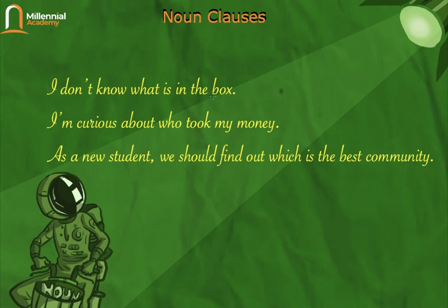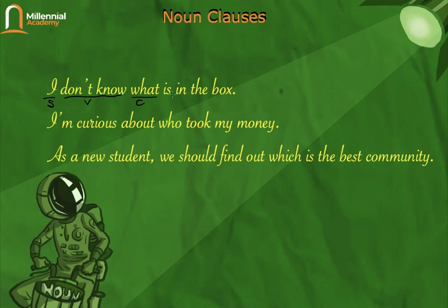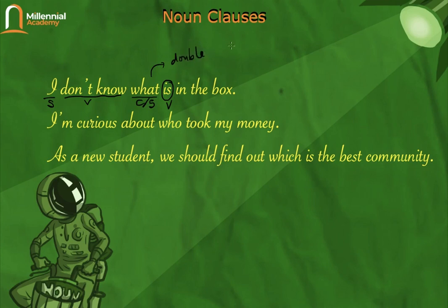Example: 'I don't know what is in the box.' Notice here: 'I don't know' is our subject and verb. Then there is the connector 'what.' After 'what,' we don't find a subject — instead we immediately find the verb 'is.' So where is the subject? It turns out 'what' itself functions as both connector and subject of the noun clause. So 'what' has a double function.